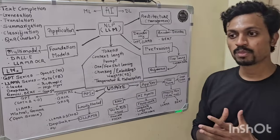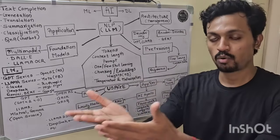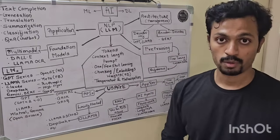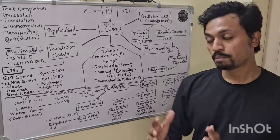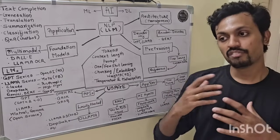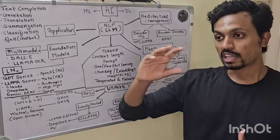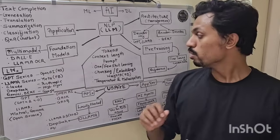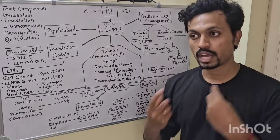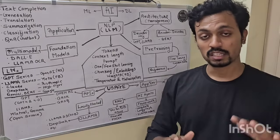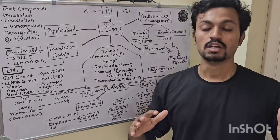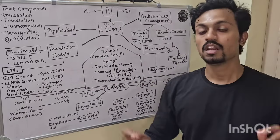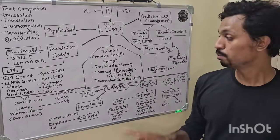Then comes inference. Inference means the trained model is deployed for users. When a user asks a question, the model gives an answer — that is inference. The key difference: during training, the model is learning; during inference, the model is no longer learning, it is just answering.